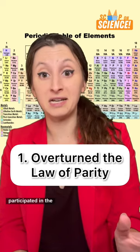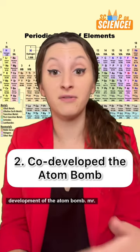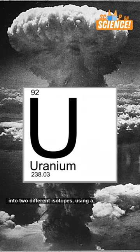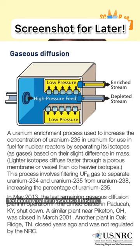Wu literally overturned a law of physics and participated in the development of the atom bomb, with her discovery of separating uranium into two different isotopes using a technology called gaseous diffusion.